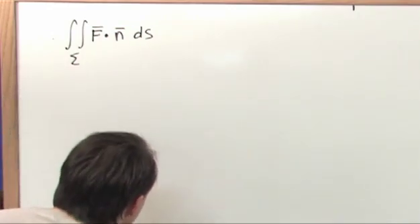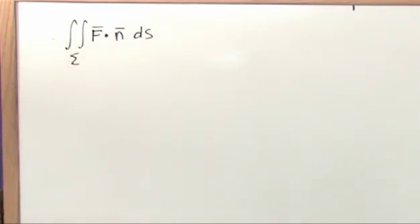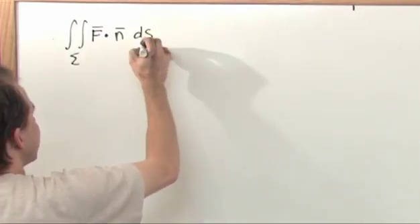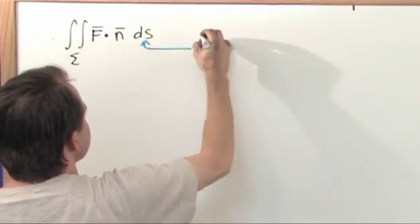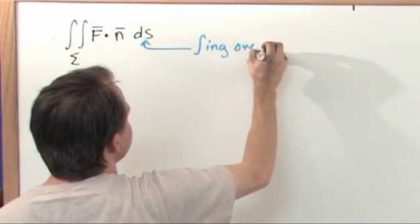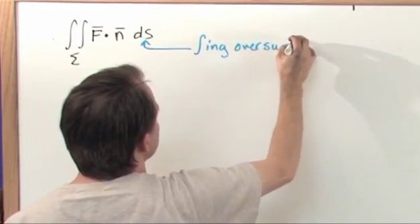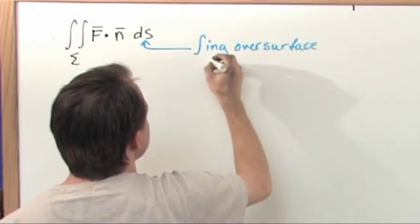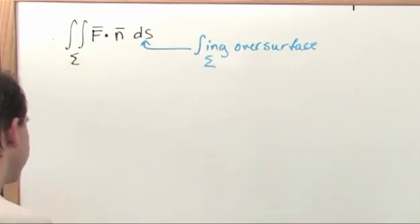So let me, or it's an integral over an oriented surface, okay? So this thing is just telling me I'm integrating over the surface, the surface given to me by sigma, okay? That's all that's telling me.